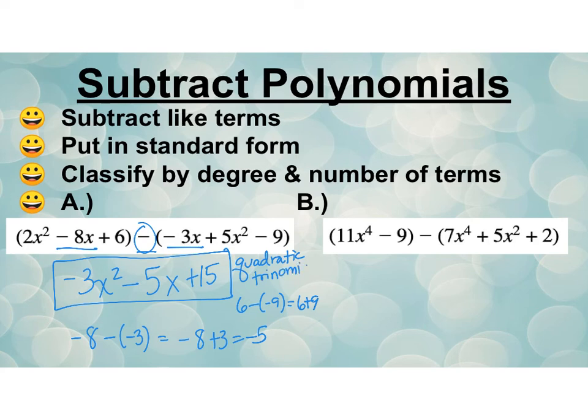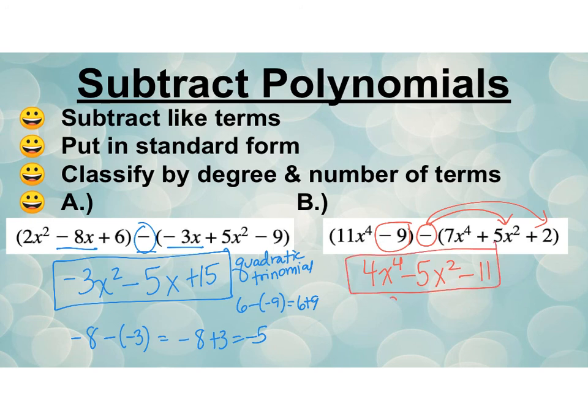Let's try the next one. I see my x to the fourth. It is subtraction. So 11 minus 7 is 4x to the fourth. I have a negative 5. So minus 5x squared. And then I have negative 9 minus 2 for minus 11. That's my final answer in standard form. My degree is 4. So we have a quartic trinomial.